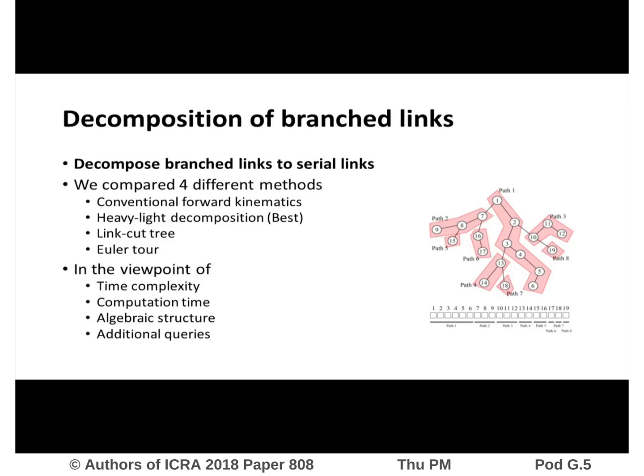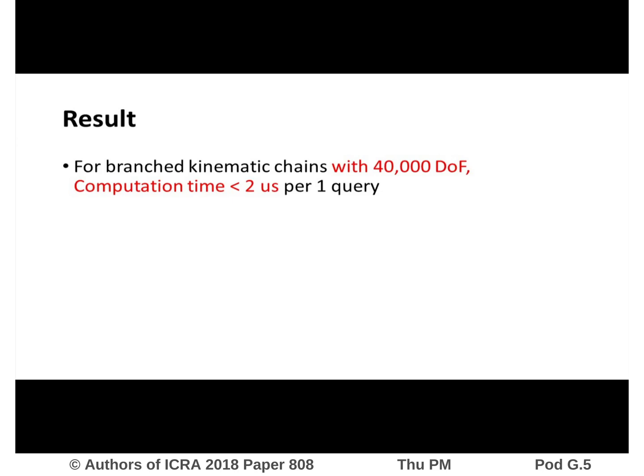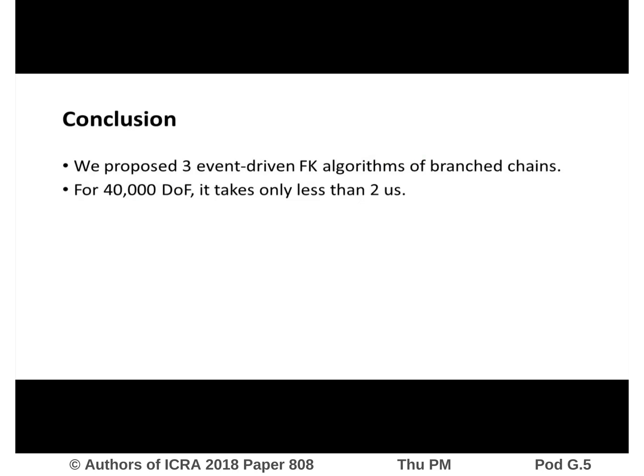The proposed event-driven forward kinematics achieves fast processing for robots with enormous degrees of freedom. Our experimental results show it takes less than 2 microseconds even for 40,000 degrees of freedom. We conclude by emphasizing that we proposed three event-driven forward kinematics algorithms for branch chains, and that even for a 40,000 degrees of freedom system, the computation time to process one query changing one joint is less than 2 microseconds. Thank you.